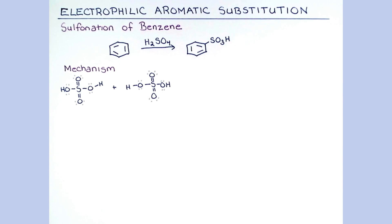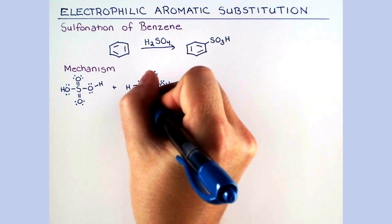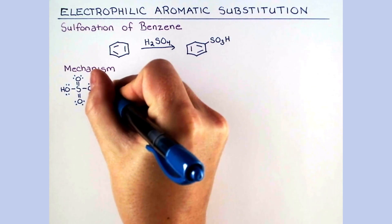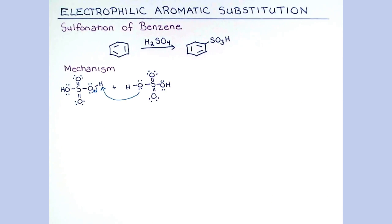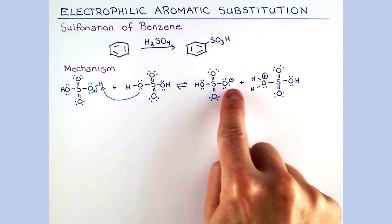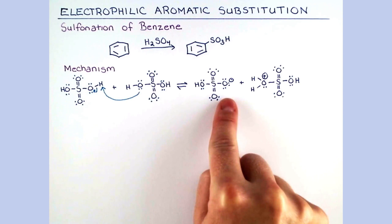Let's add on our lone pairs to keep track of them a little bit better. We can show the OH group of one molecule of sulfuric acid becoming protonated by the acidic proton on a second molecule of sulfuric acid. This gives the conjugate base of sulfuric acid and this oxonium. Keeping track of our charges, notice that our first molecule gave up a proton and gained an extra lone pair. This gives it the formal negative charge on oxygen.